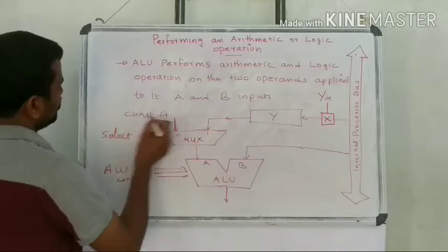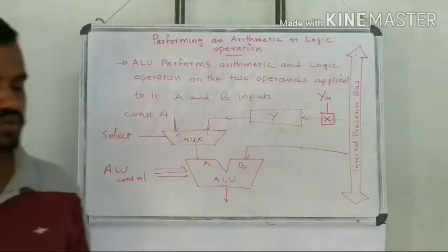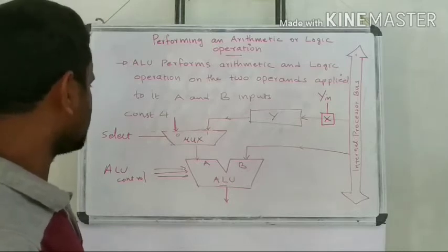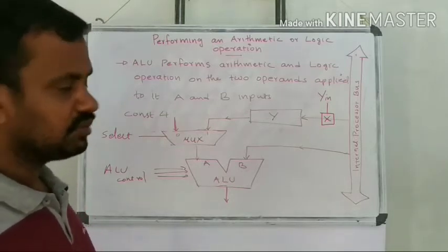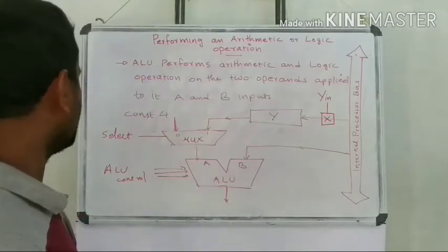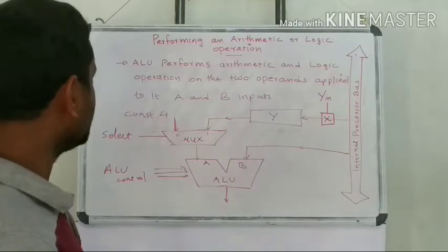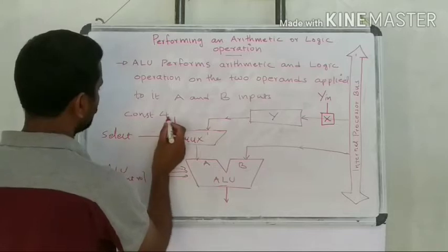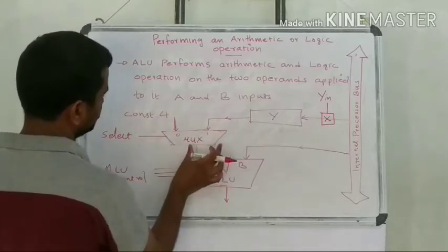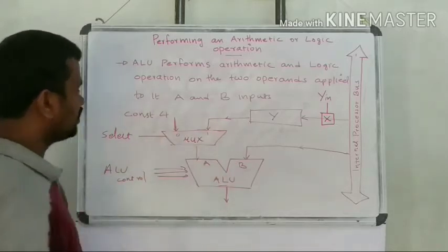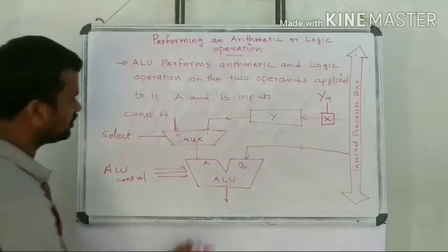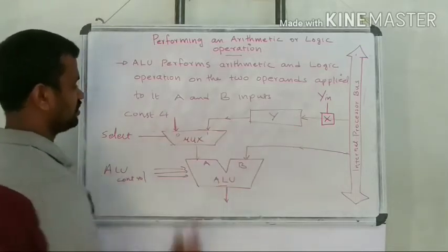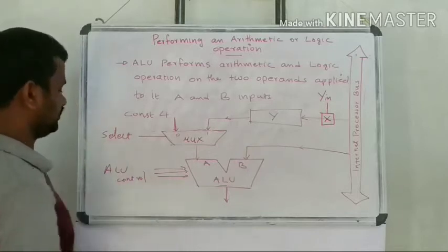This constant 4 is used for updating the value of the PC during execution of an instruction. After fetching one instruction, we have to update the PC by 4, that is, increment the PC value by 4. That is why constant 4 is used as one input of the multiplexer. The A input will be selected as either constant 4 or Y, based on the select line.